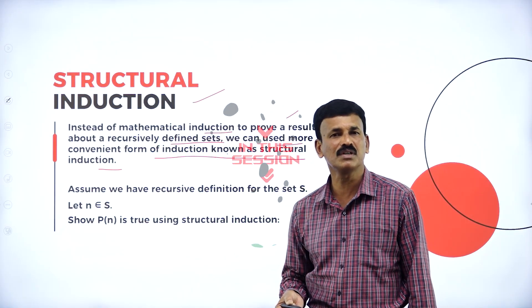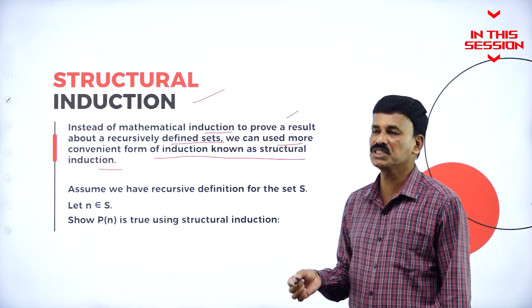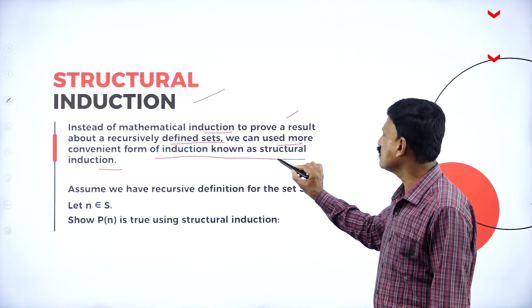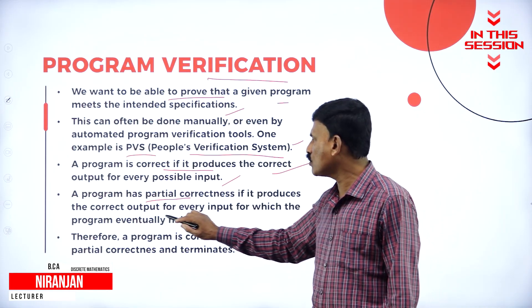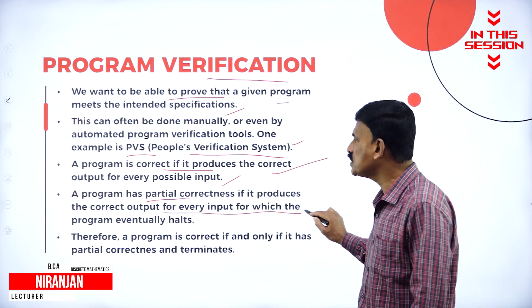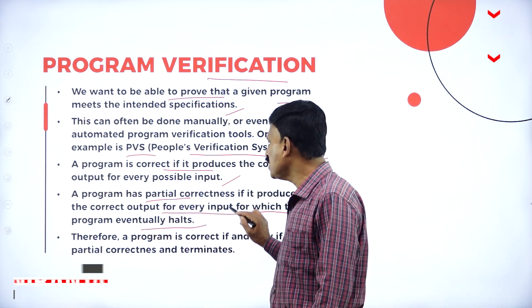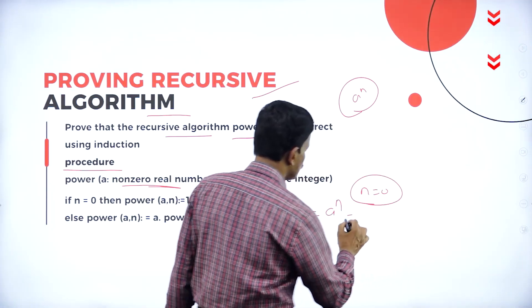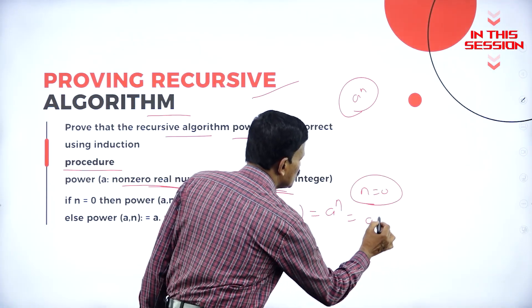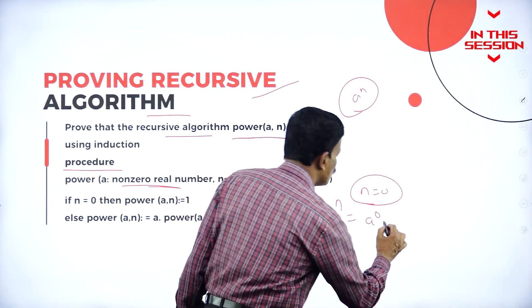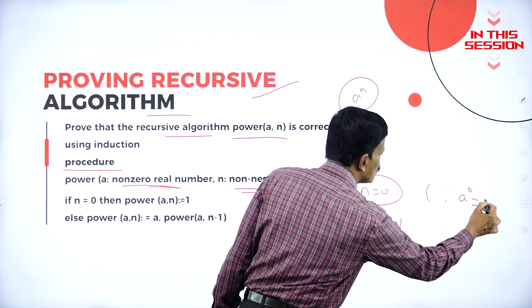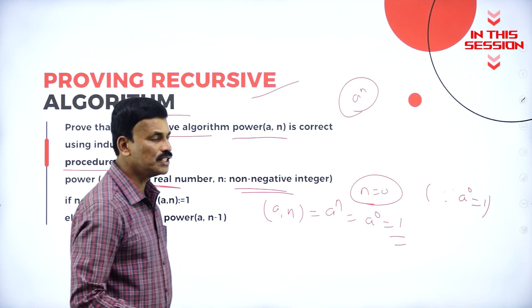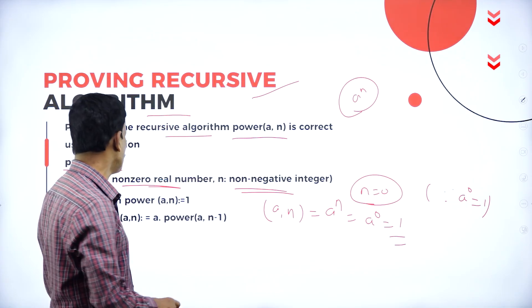The more convenient form of induction process is nothing but structural induction. The program has partial correctness if it produces the correct outputs for every input for which the program is eventually halted. If n is equal to 0, this becomes a to the power of 0. Since any number to the power of 0 is always equal to 1, so a to the power of 0 is equal to 1.